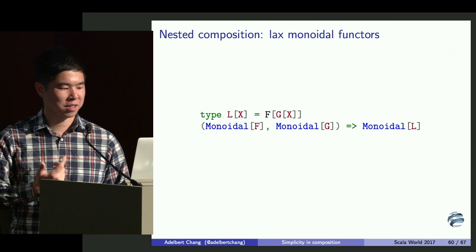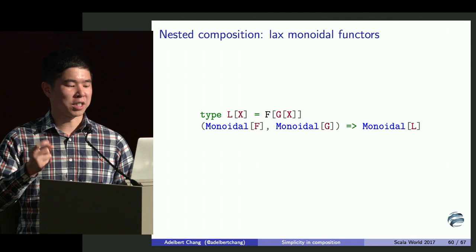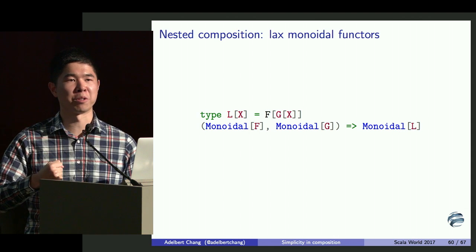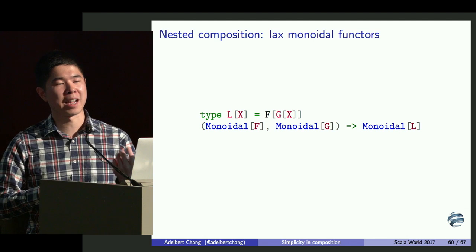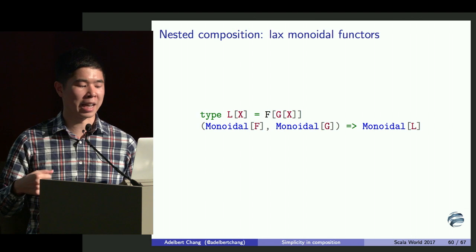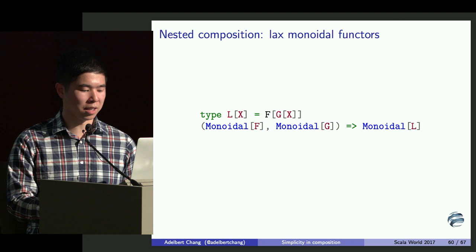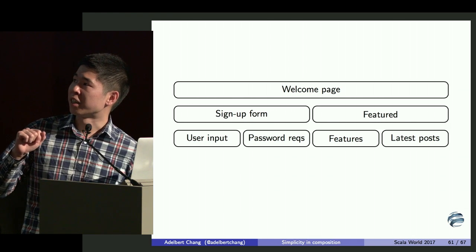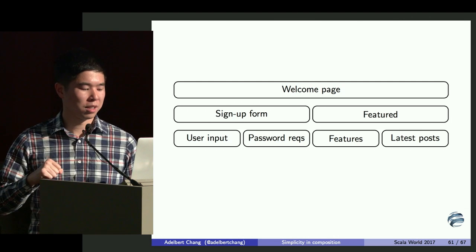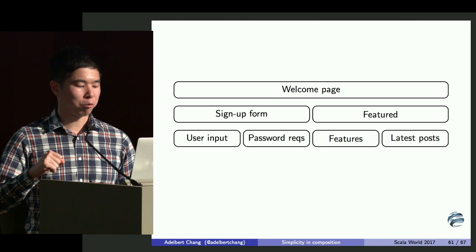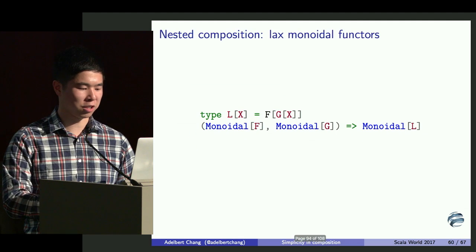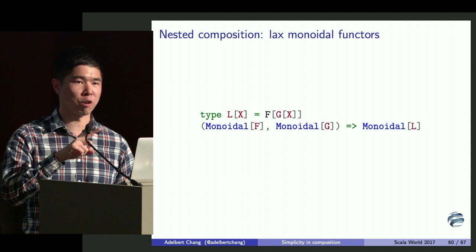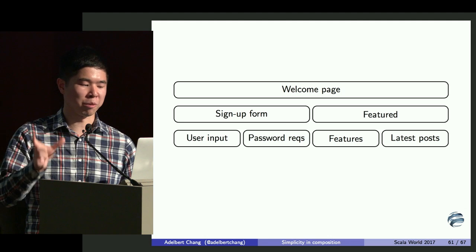The more interesting thing is nested composition — not pairs of F and G but F of G of something. This becomes useful if you have something producing IO of a value and another producing IO of either of an error at something: one IO action that doesn't fail and one that may or may not fail. How do we combine those? For applicative functors, we can lift user input from IO into IO of either. If F is IO and G is either, we use pure: map over the IO and wrap the value into pure for either, getting IO of either, and bubble back up. For applicative functors, this works by zipping the outer F's first, then mapping over to zip the inner things. Pure wraps in G then in F. So two applicative functors can be composed to get another applicative functor.